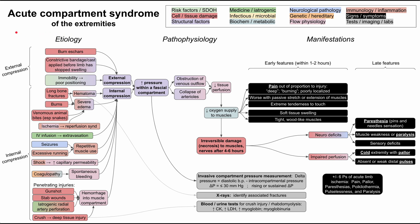This is a mechanism of disease map for acute compartment syndrome. I'll be talking about compartment syndrome of the extremities compared to abdominal compartment syndrome, which will have another video. We'll cover the etiology, pathophysiology, and manifestations of acute compartment syndrome of the extremities. Each box in this flowchart is color-coded according to the legend in the top right. Let's clear out all the boxes and repopulate this flowchart one by one.